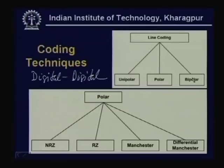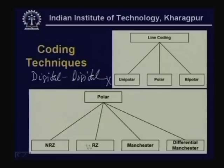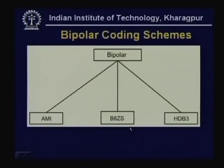Line coding can be divided into three types: unipolar, polar, and bipolar. Unipolar is not very popular due to its various limitations. Polar encoding, where the signal has two different levels, has a number of varieties such as Non-Return to Zero (NRZ), Return to Zero (RZ), Manchester encoding, and differential Manchester encoding. These are the four popular polar techniques. For bipolar techniques, the popular ones are AMI (Amplitude Mark Inversion), B8ZS, and HDB3. We shall discuss all these techniques, their advantages, disadvantages, and bandwidth requirements in detail.